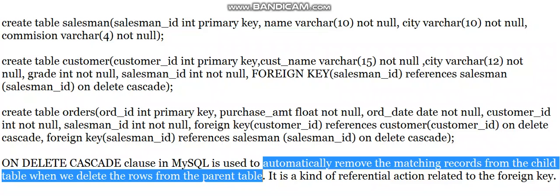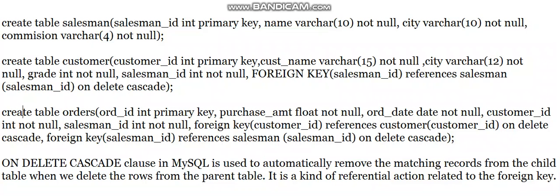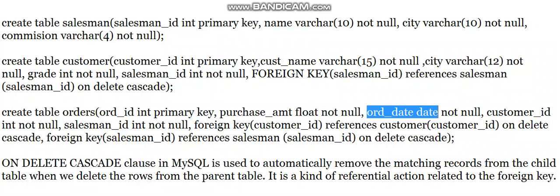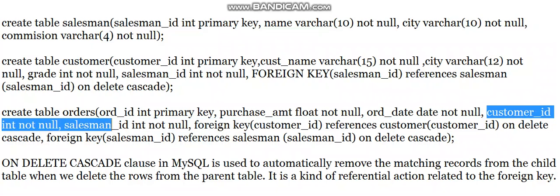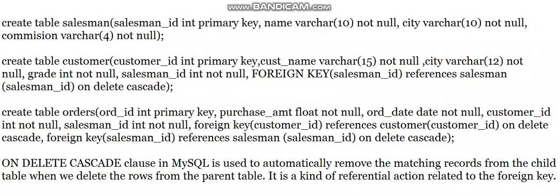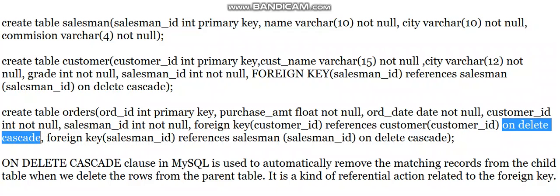The third table is orders. Order_ID is INT as primary key. purchase_amount is FLOAT with NOT NULL. order_date is of type DATE with NOT NULL. customer_ID and salesman_ID are both NOT NULL. The foreign key constraint is: FOREIGN KEY (customer_ID) REFERENCES customer(customer_ID) with ON DELETE CASCADE.